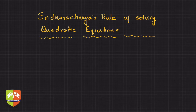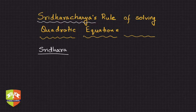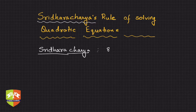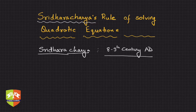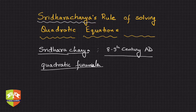We are going to take up yet another method of solving quadratic equations. This rule is called Sridharacharya's Rule. Sridharacharya — 'acharya' means teacher — was an Indian mathematician from around the 8th or 9th century AD. At that time, Indian as well as Arabic mathematicians were getting involved in the study of algebra, and Sridharacharya's work is pretty famous. Today we call the same thing the quadratic formula.